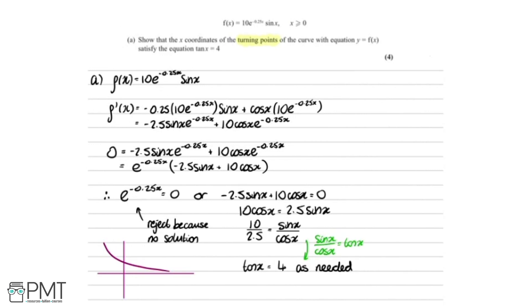Looking at where we get the marks: we get two marks for successfully differentiating using the product rule; another mark for factorising out e^(−0.25x) and realising it has no solutions so we reject it; and the final mark for the working that leads to tan(x) = 4.